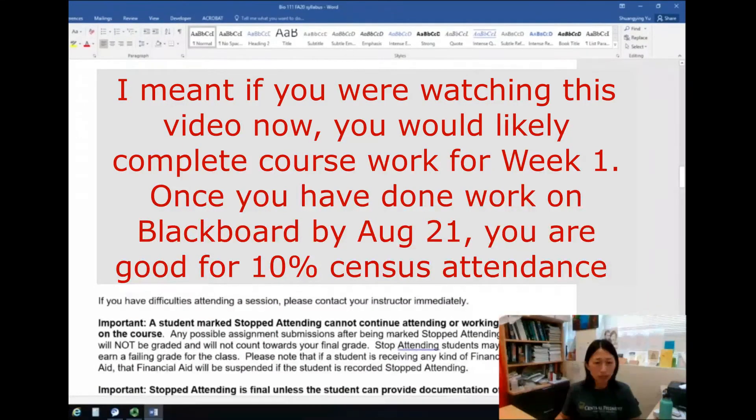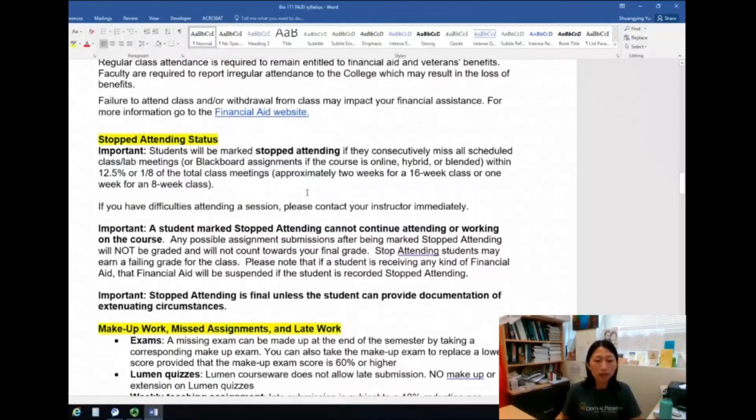Now, after the 10 percent census date, you need to make sure that you complete weekly activities online through Blackboard. If you stop doing online activities for two weeks in a row, two weeks straight, then I have to mark you as stop attending and you will be dropped from this class. You will have no access to Blackboard to catch up with your schoolwork, your coursework. So this is important. If you know that you're going to miss class for two weeks straight, you need to let me know why you will be missing work or why you have missed two weeks of work. And then I can decide whether I mark you or not as stop attending. So again, communication is the key. If anything happens, you can't do schoolwork, let me know.